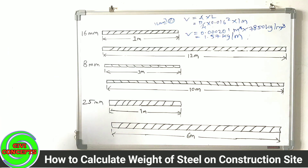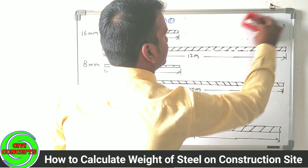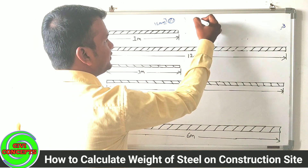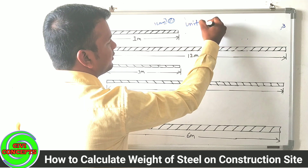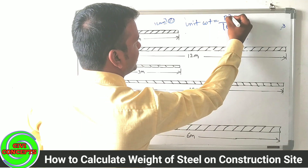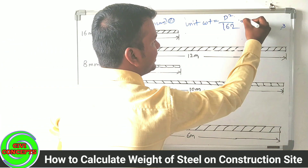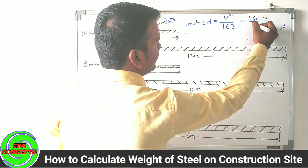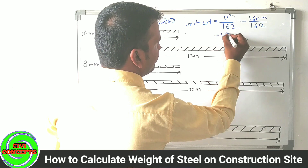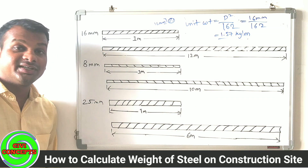If you find the unit weight, you can directly find the total weight. Now for the other method — a simpler approach. We use the formula: unit weight is equal to D squared divided by 162, where D is the diameter in mm. So for 16mm: 16 squared divided by 162 gives a unit weight of 1.57 kg per meter.